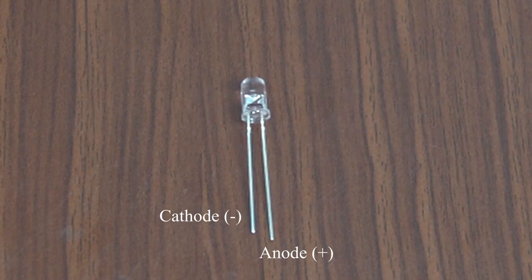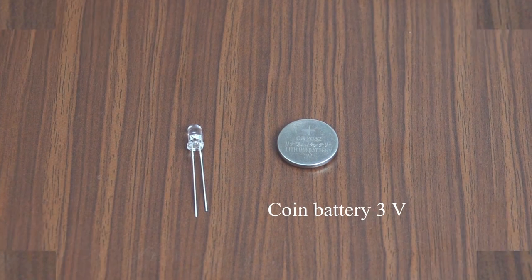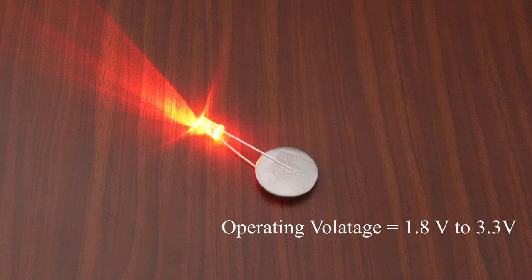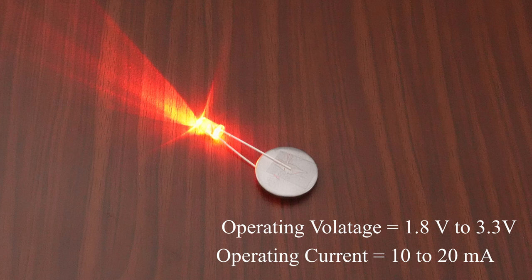Anode is the positive terminal and cathode is the negative terminal. The working principle of LED is electroluminescence. Operating voltage of the LED is 1.8V to 3.3V and operating current is 10 to 20mA. When we apply the proper voltage to the LED, it will emit light.